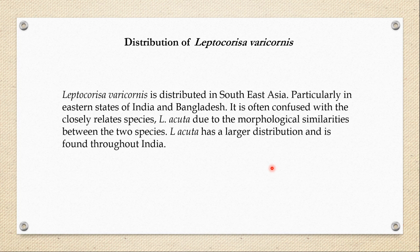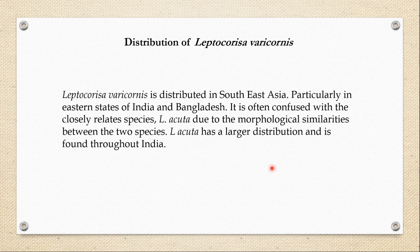Leptocoryza variconis is distributed in Southeast Asia, particularly in the eastern states of India like Assam, West Bengal, Bihar, Odisha, as well as in Bangladesh. It is often confused with the closely related species Leptocoryza acuta because they share many morphological similarities. However, Leptocoryza acuta is more brownish in color whereas Leptocoryza variconis is more greenish. Leptocoryza acuta also has a much wider distribution and is found throughout India, whereas Leptocoryza variconis is found mostly in the eastern states of India and in Bangladesh.